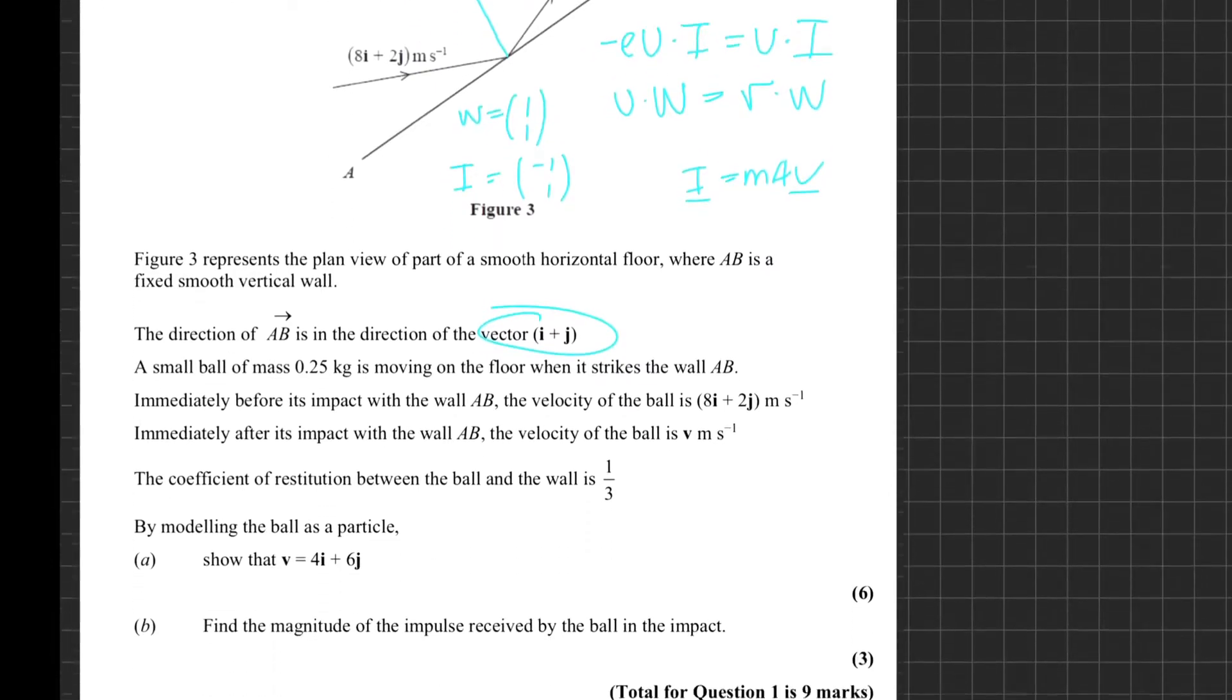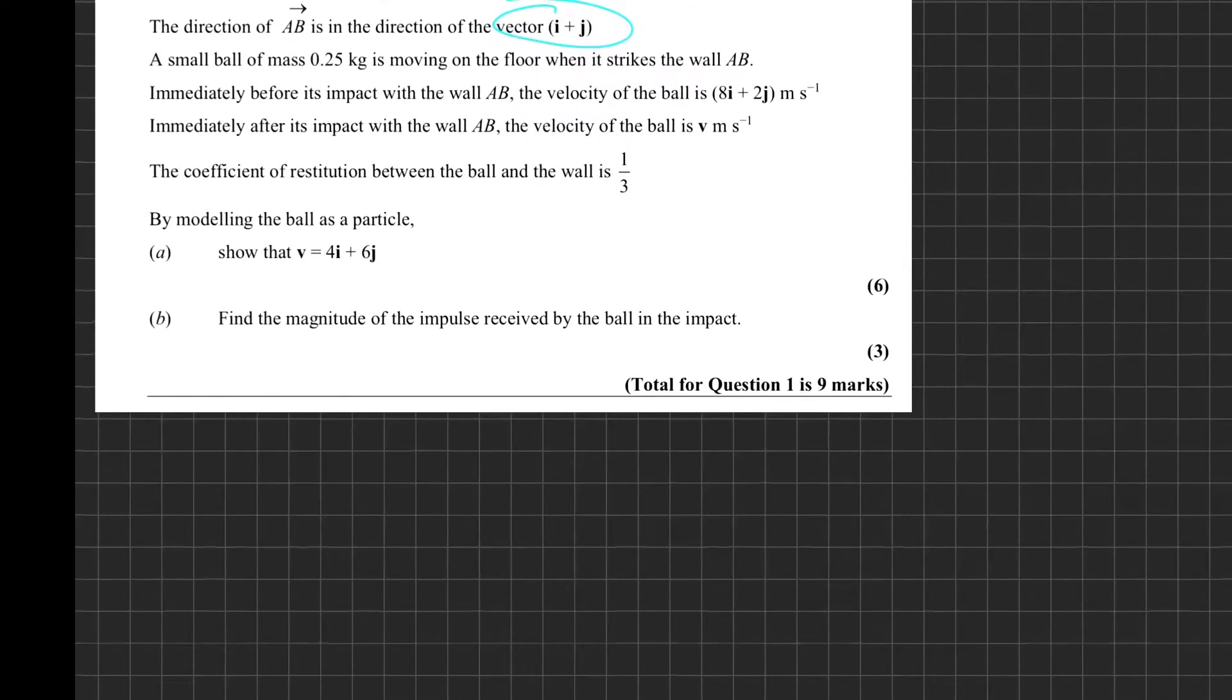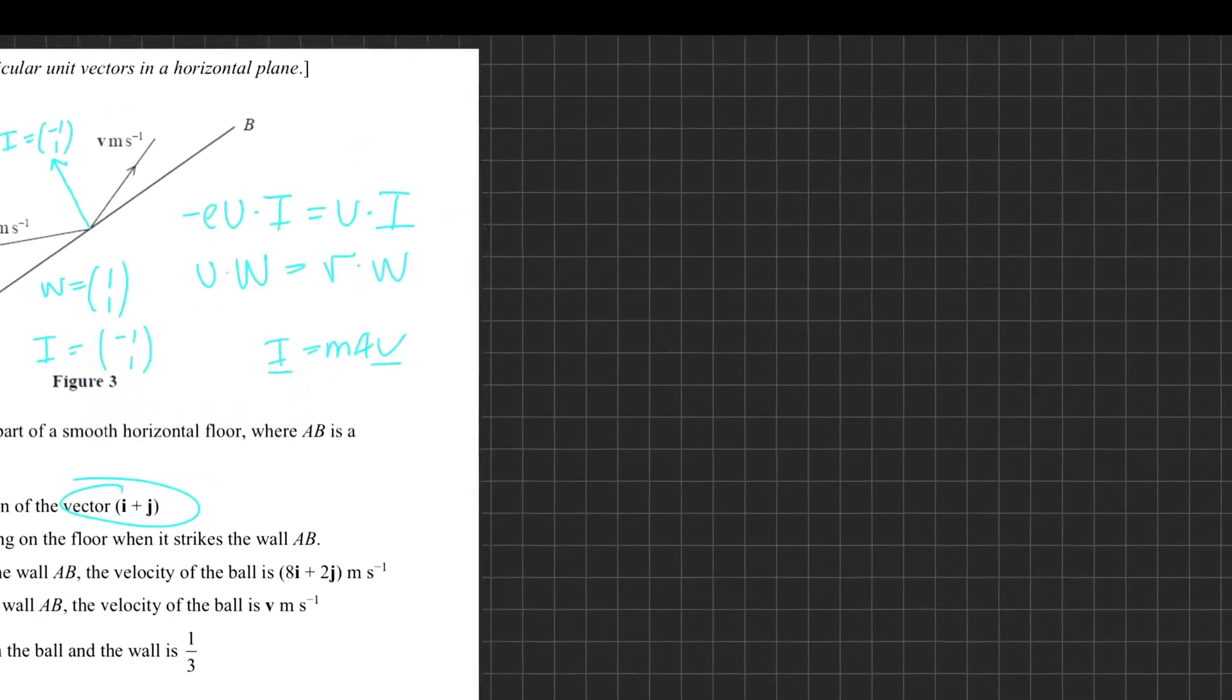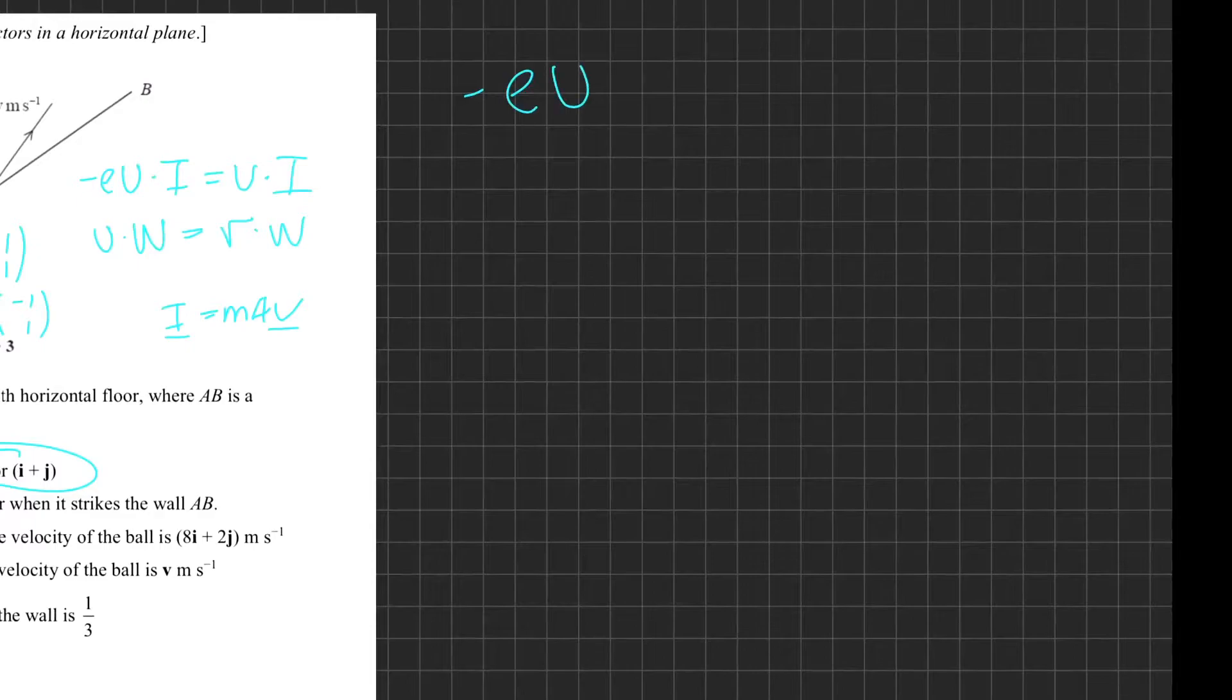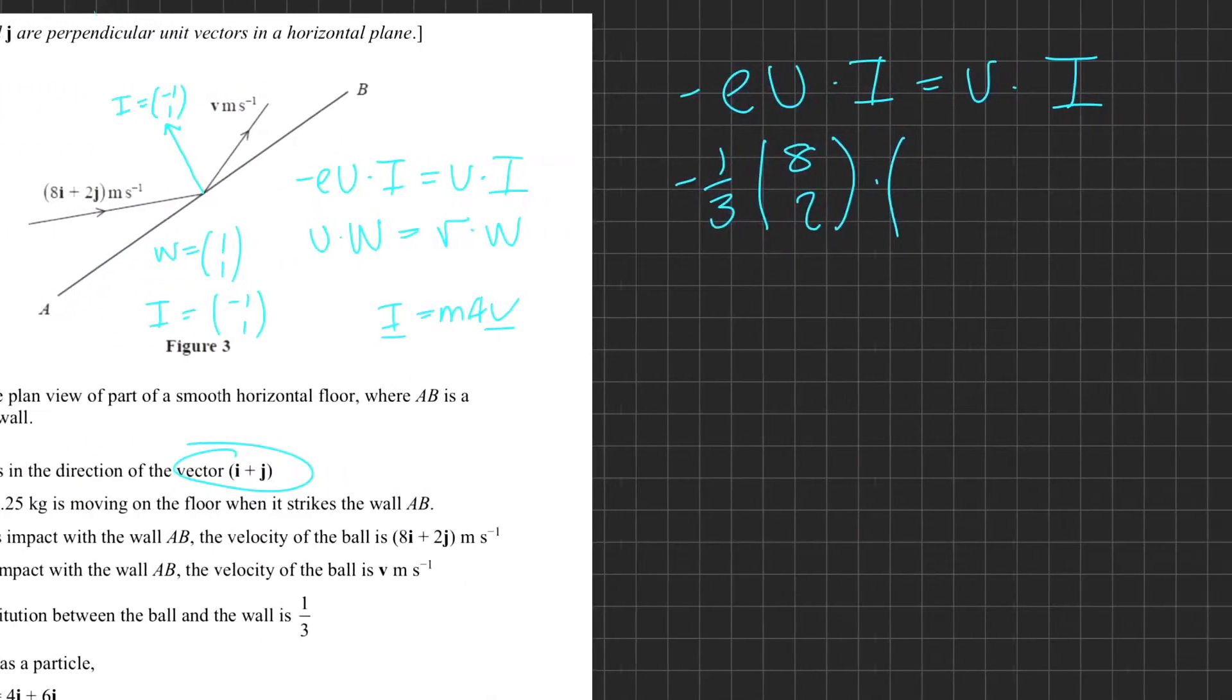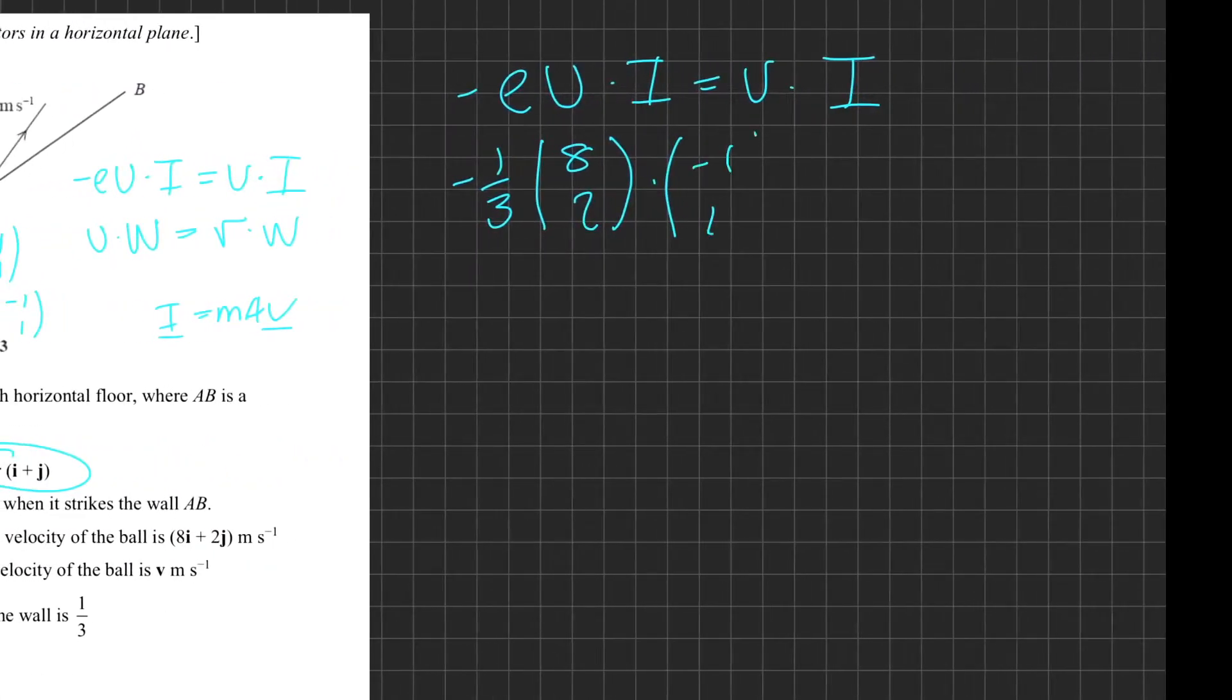Now that we know these things, we can tackle the first part of the question - showing that v is 4i + 6j. We know that -e(u·i) = v·i. So let's plug in our values: -1/3 times u, which we know is (8,2), dot i, which we also know is (-1,1), equals v, which is what we don't know.